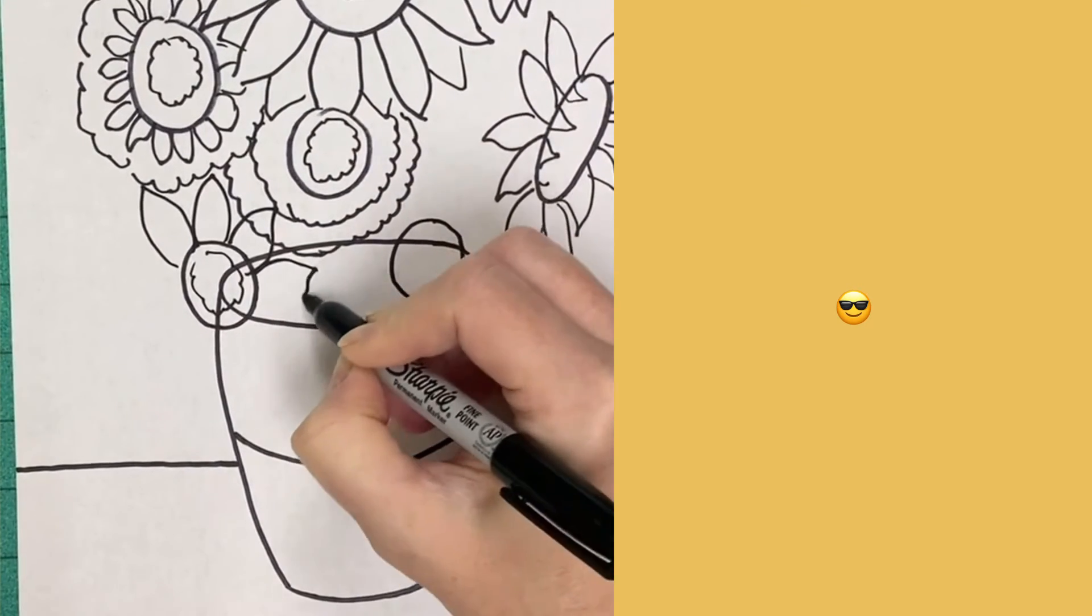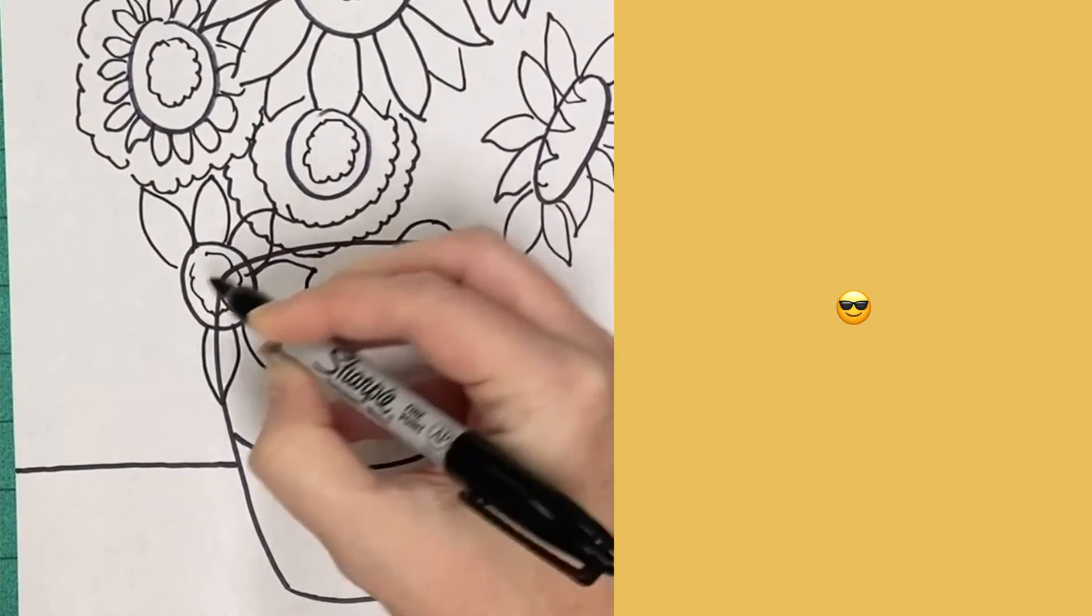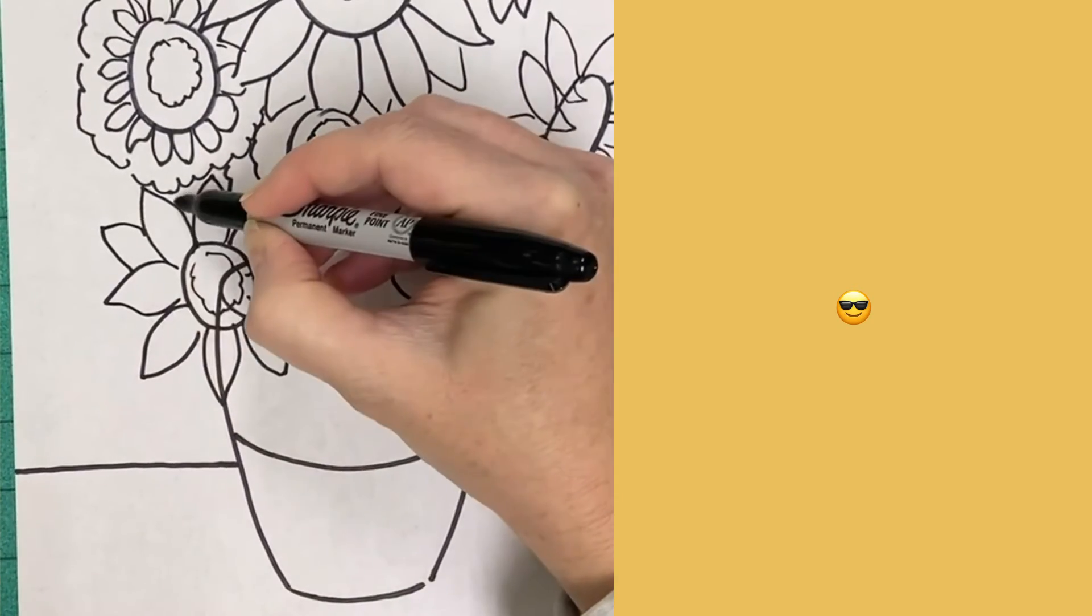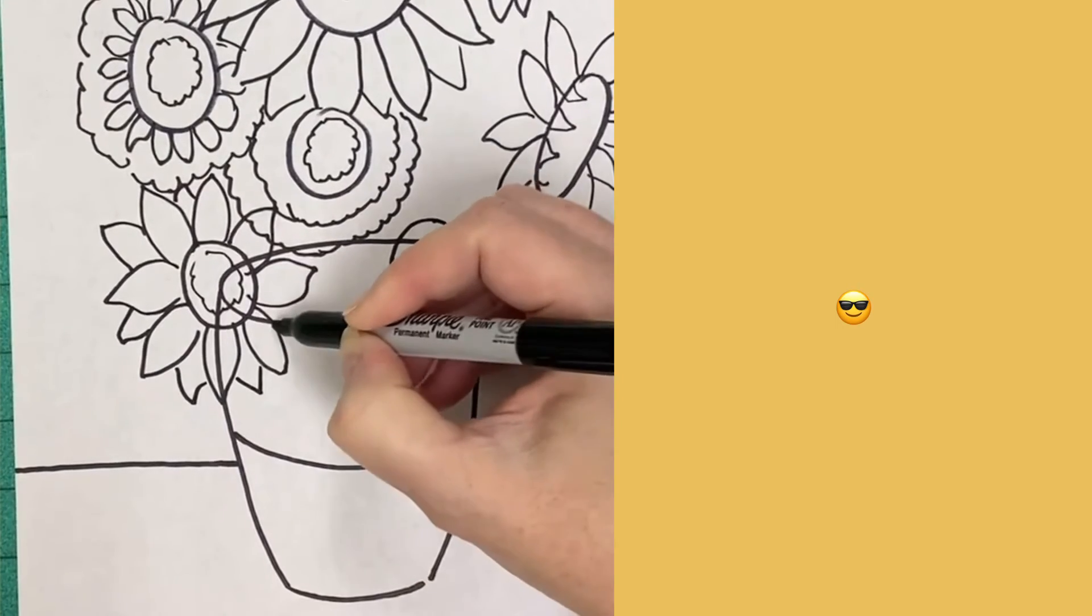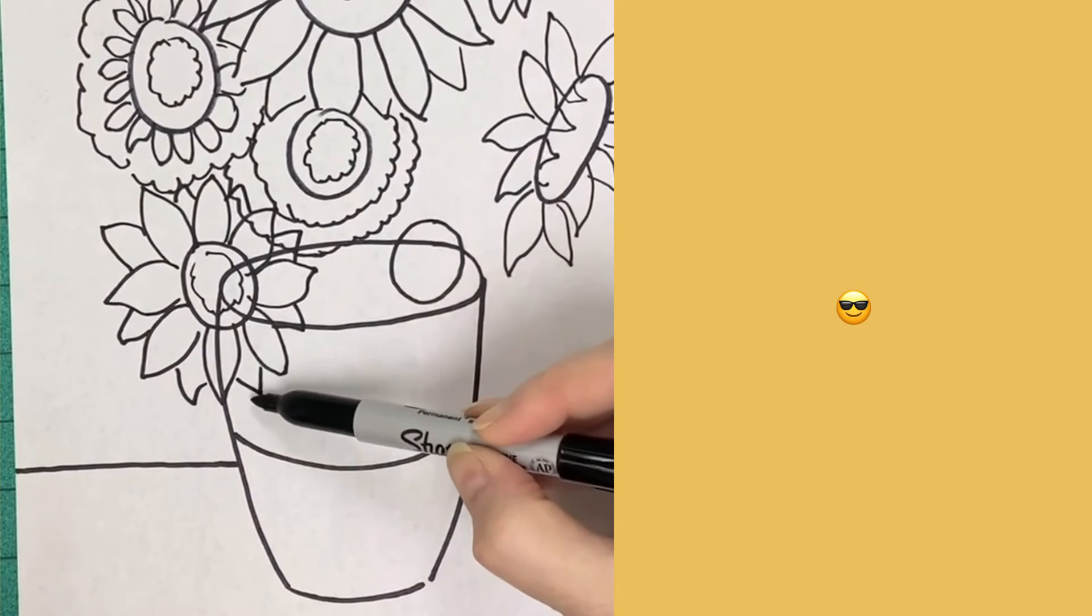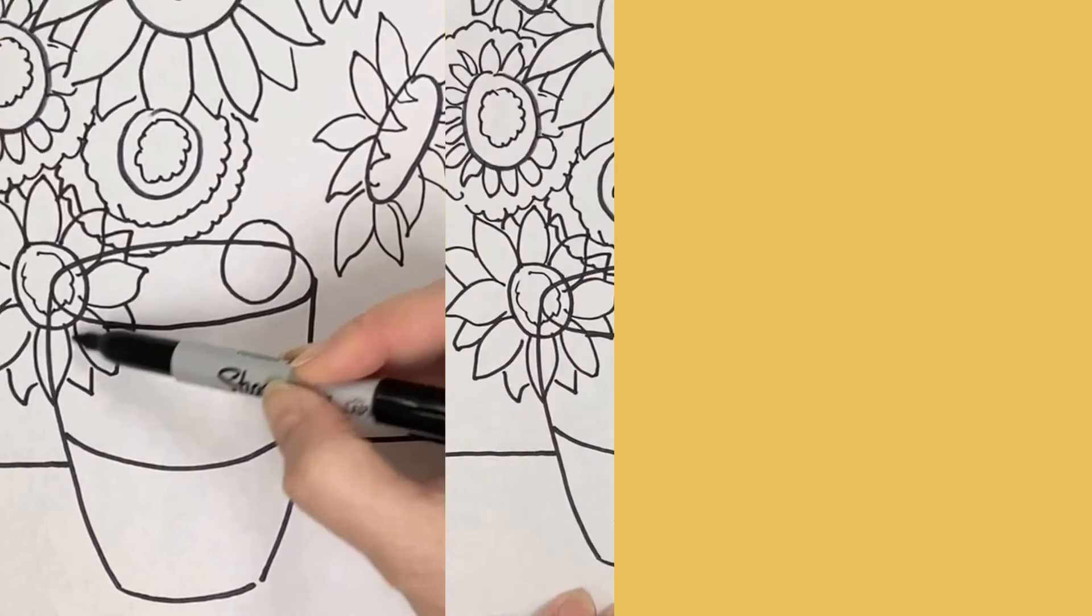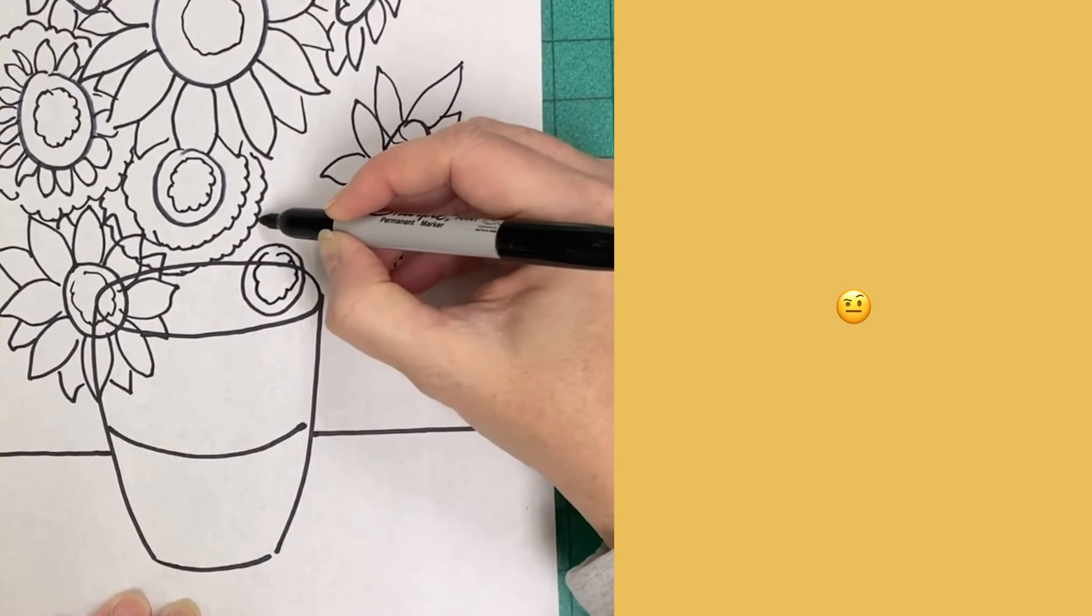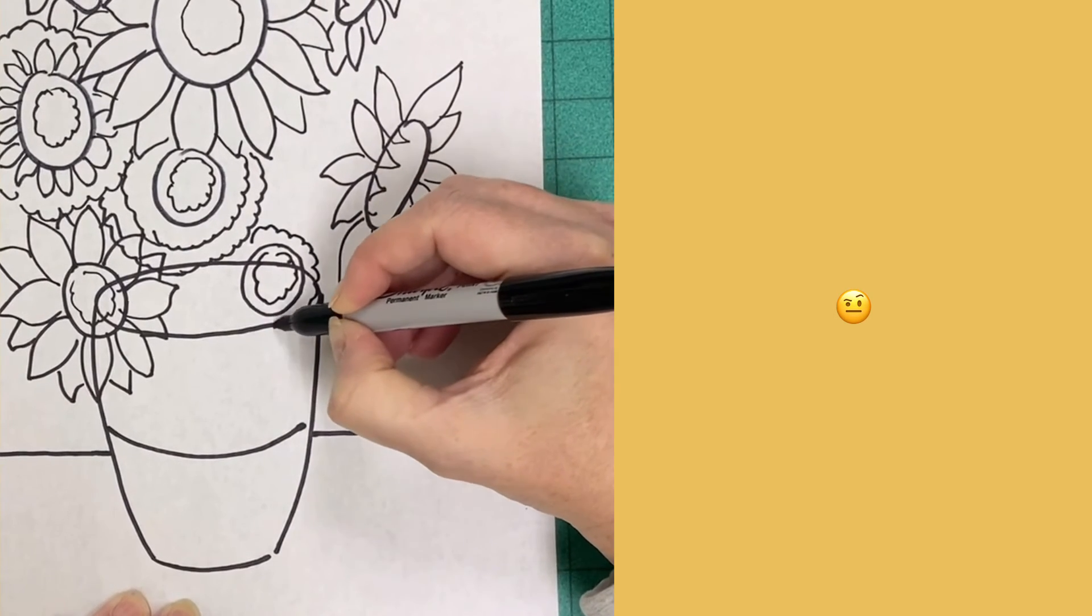If you overlap something you will want to go back and erase the line out that you have overlapped. So finish up the last of your sunflowers and don't forget to go back and erase out any lines that you don't need or you have overlapped.